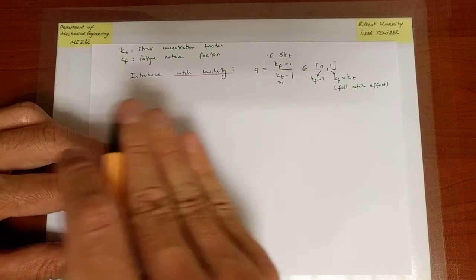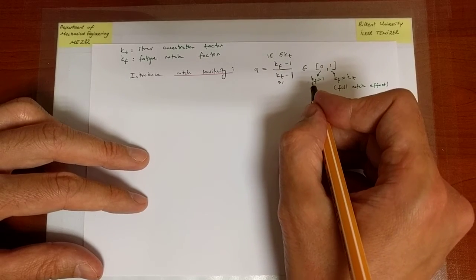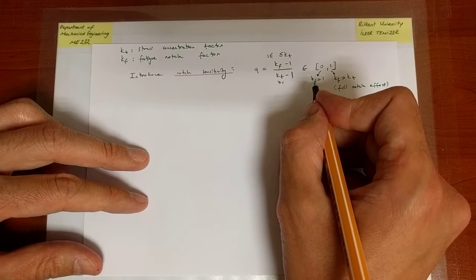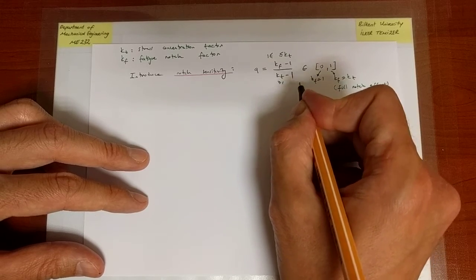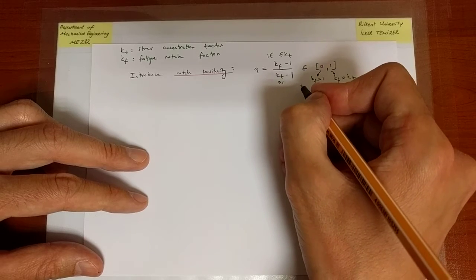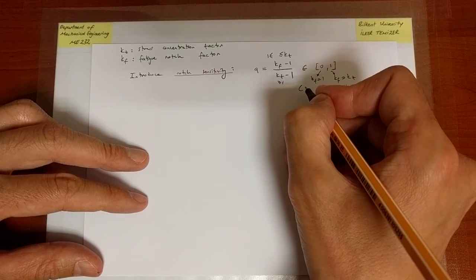Whereas if KF is equal to 1, it's like we are omitting the presence of the stress concentration, because remember this is the thing that's going to map the nominal stress amplitude to the pointwise value. So this means that there is no notch effect.